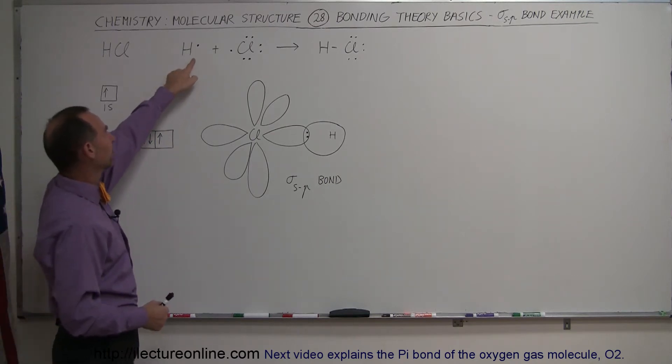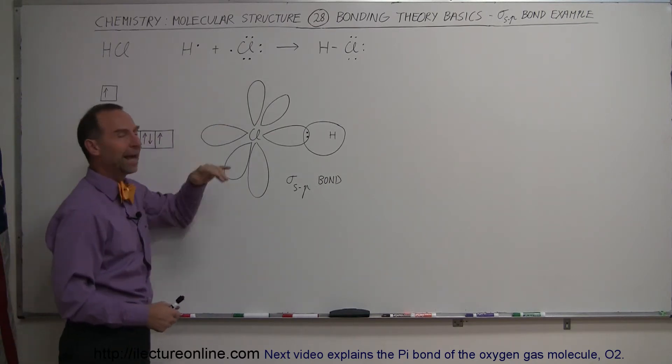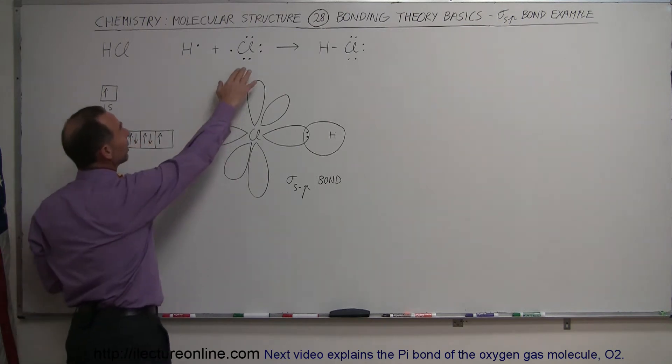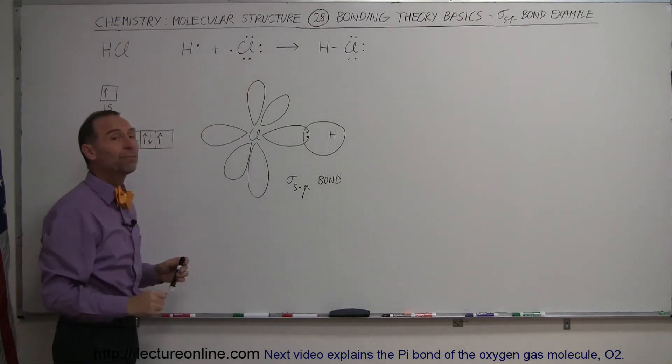Hydrogen has a single valence electron in its one s orbital. Chlorine has seven valence electrons, two in its three s orbital, and five more in its three p orbitals.